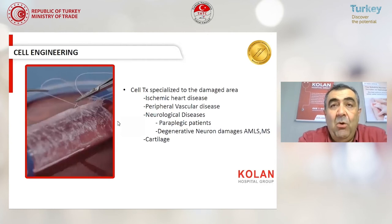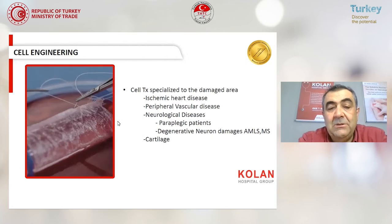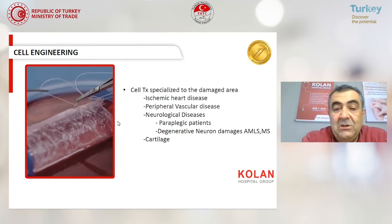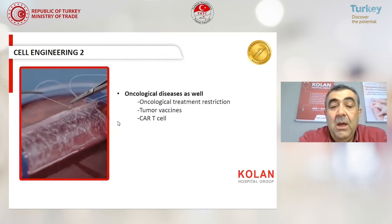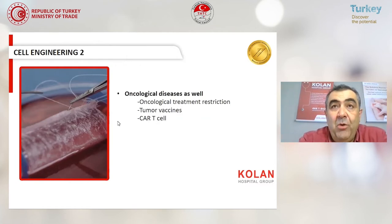Cell engineering is still an experimental area for stem cells. Some people use stem cells for ischemic heart disease, peripheral vascular disease, and neurologic diseases — though these are all currently experimental areas. For oncologic diseases, we now use vaccines and CAR T-cell treatment for some refractory oncologic patients.